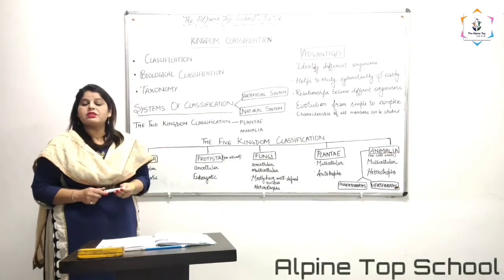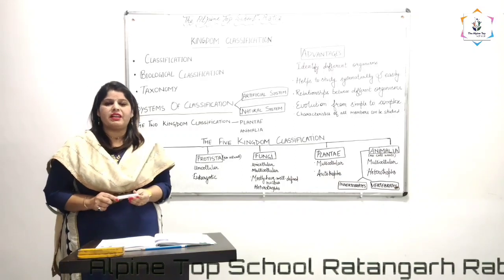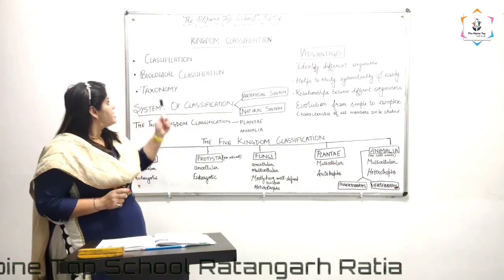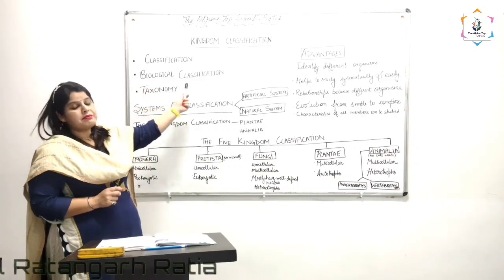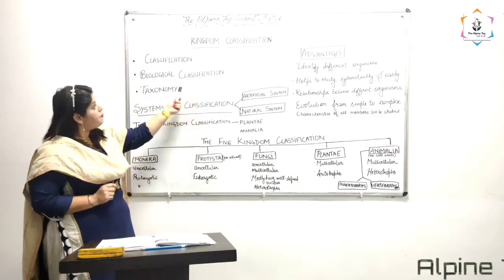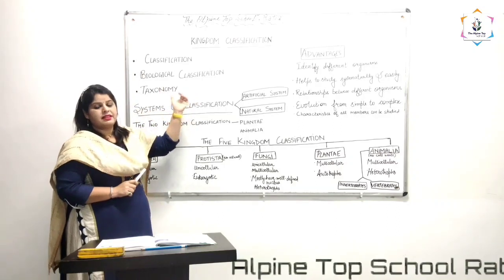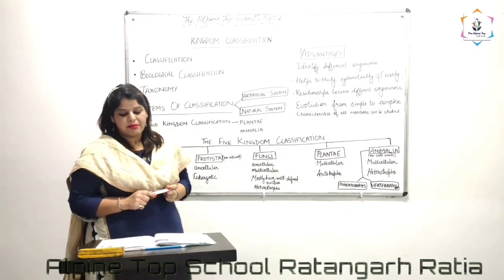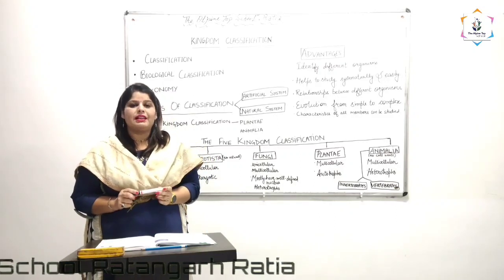The grouping of different kinds of organisms on the basis of their common characteristics is called classification. The grouping of different kinds of organisms on the basis of their common characteristics and similarities is called biological classification.